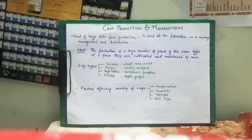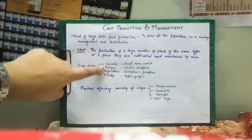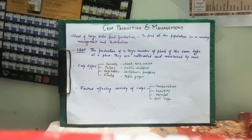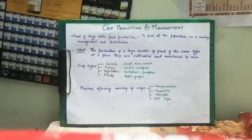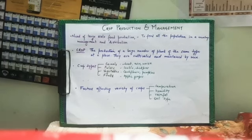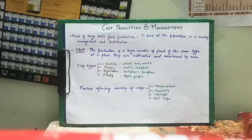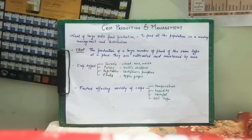Now talking about crop types, we must be familiar with all of these. First are cereals, which we use in our daily food — wheat, rice, and maize. Second are pulses, the dals: lentils, chickpeas, kidney beans (rajma), etc. Third are vegetables: cauliflower, pumpkins, brinjal, and more. Fourth are fruits: apples, grapes, or dry fruits which are produced after drying of fruits. These are all types of crops which need to be grown on a large scale in a cropland.